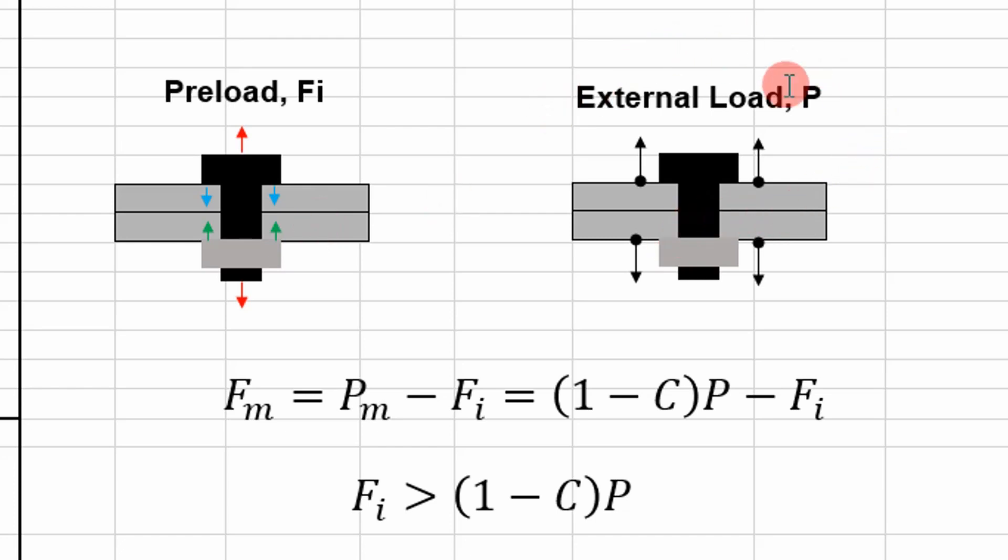In the previous video, we applied an external load and we treated this system as springs in parallel. So when you apply an external load P, the percentage of the load gets transferred between both the bolt and the members based on the stiffnesses between the two.